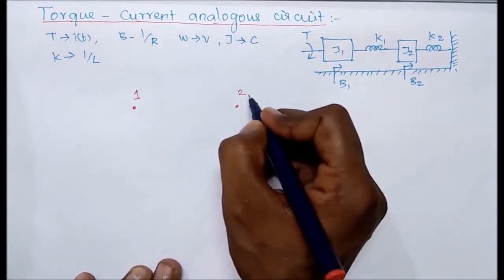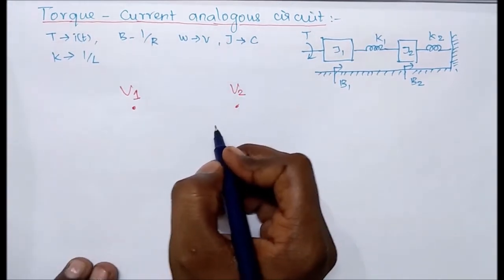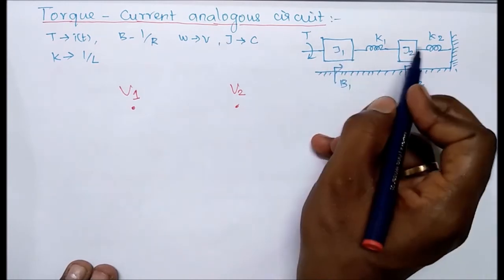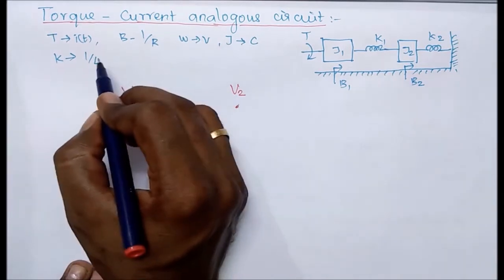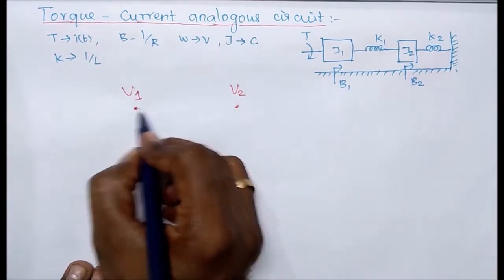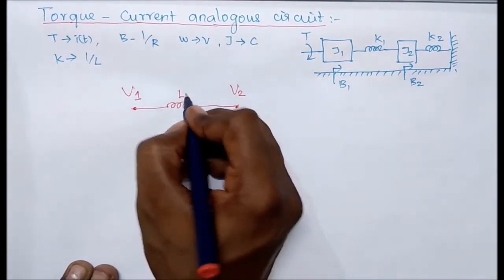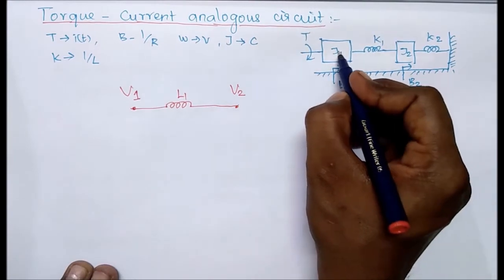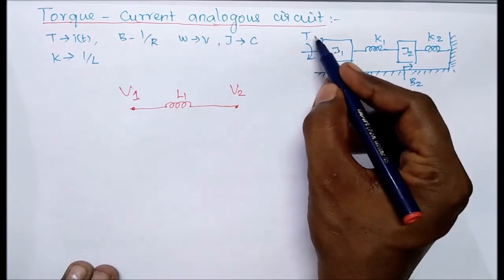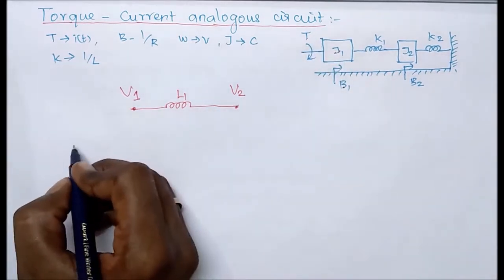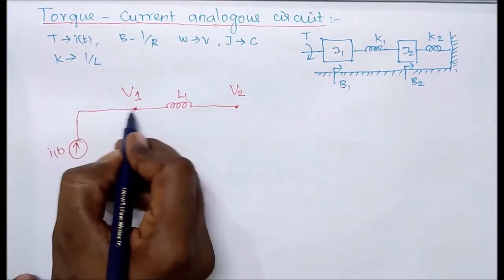Node one and node two. The voltage at node one is V1, and the voltage at node two is V2. In between these two nodes there is a common element, whose electrical equivalent is an inductor. Therefore, this inductor L1 is the common element between the two nodes. At node one, J1 and B1 are connected, and there is also a torque input, whose electrical equivalent is a current source I(t) connected at this node.